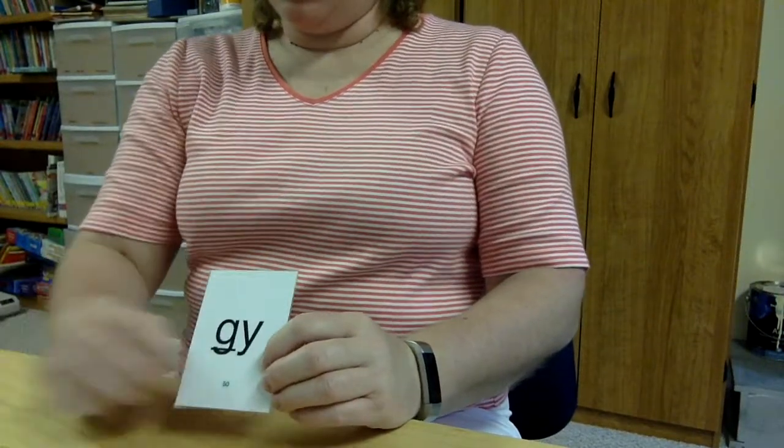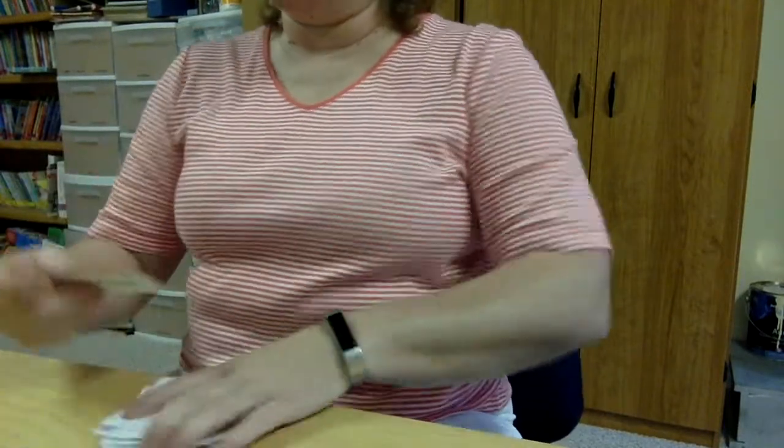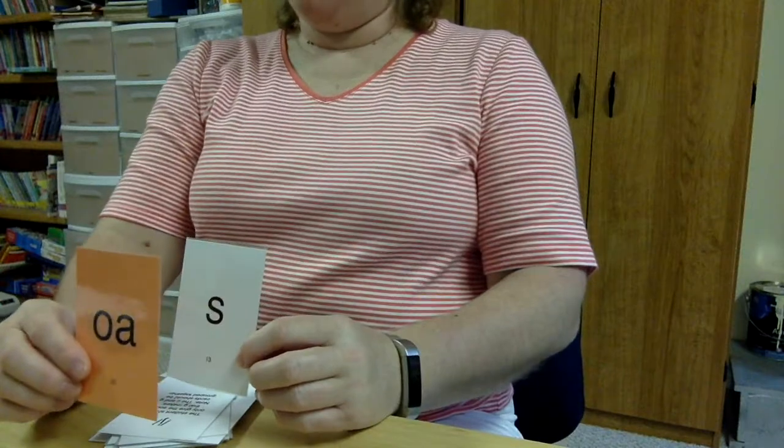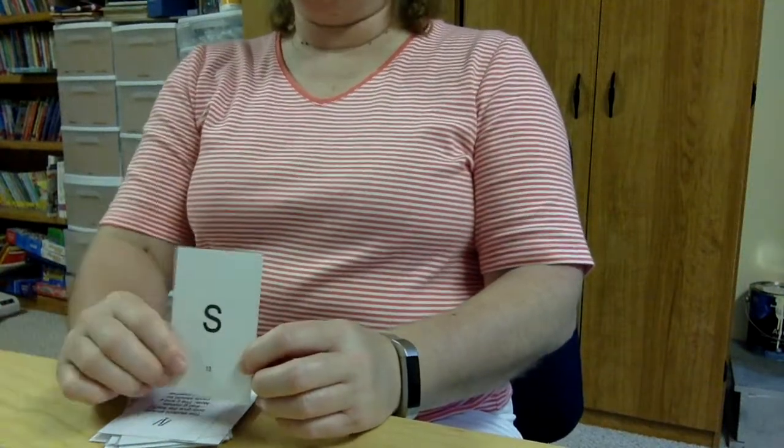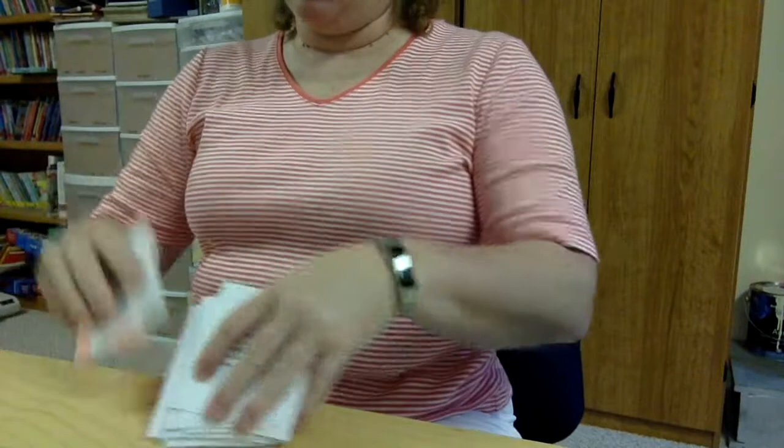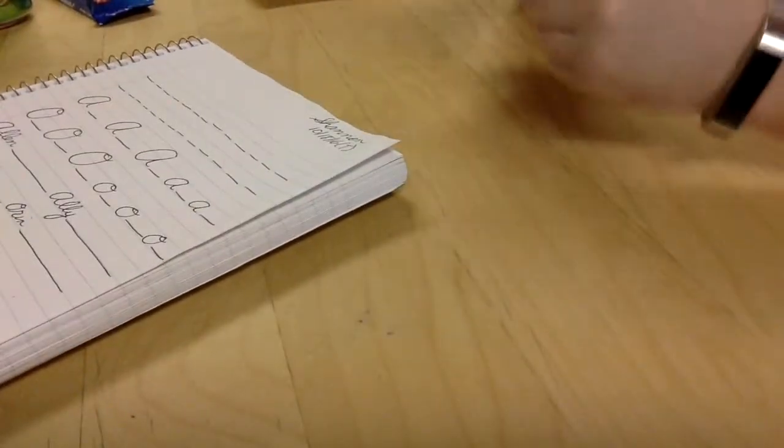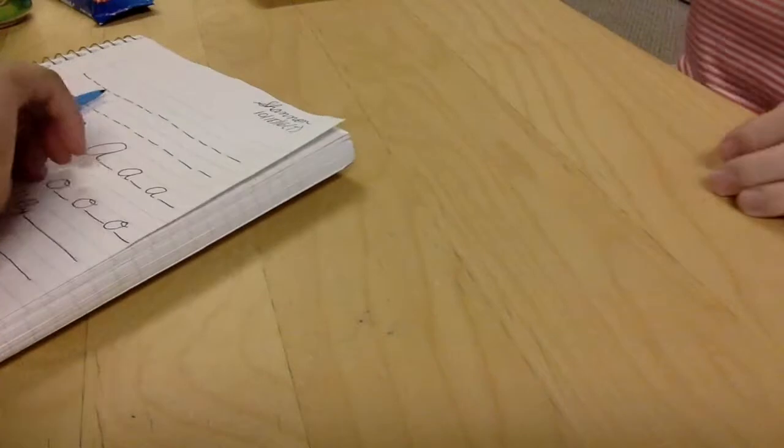G or J? J. Why is it a J? Because there's an R there. When does it say J? When there's an E-I or Y. Okay. So this isn't a J. It's a G. Yeah. Okay. J. And? J. Nice. Okay. So let's go back to these guys.